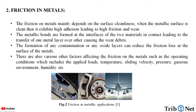Friction in metals. The friction on metals mainly depends on surface cleanliness. When the metallic surface is clean, it exhibits high adhesion leading to high friction and wear. Metallic bonds are formed at the interfaces of two metals in contact, leading to the transfer of one metal layer over the other, causing wear debris. The formation of contamination or oxide layers can reduce the friction loss at the surface of metals.